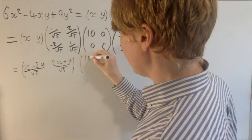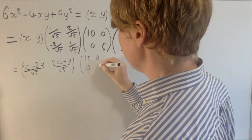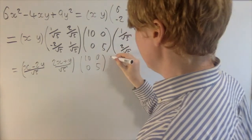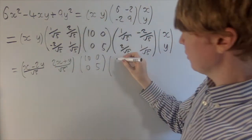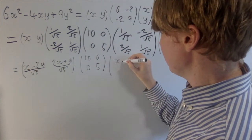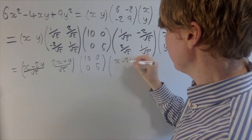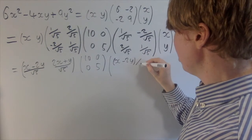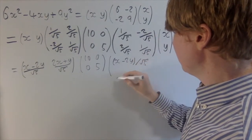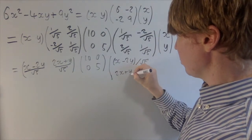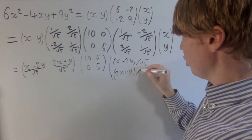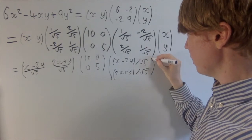So we'll leave the diagonal matrix alone just for now. And then for this next one, we need to multiply this row by x and y. So you'll get x minus 2y, put this in brackets, over root 5 like this. And then beneath this, you'll get 2x plus y over root 5, just like this.